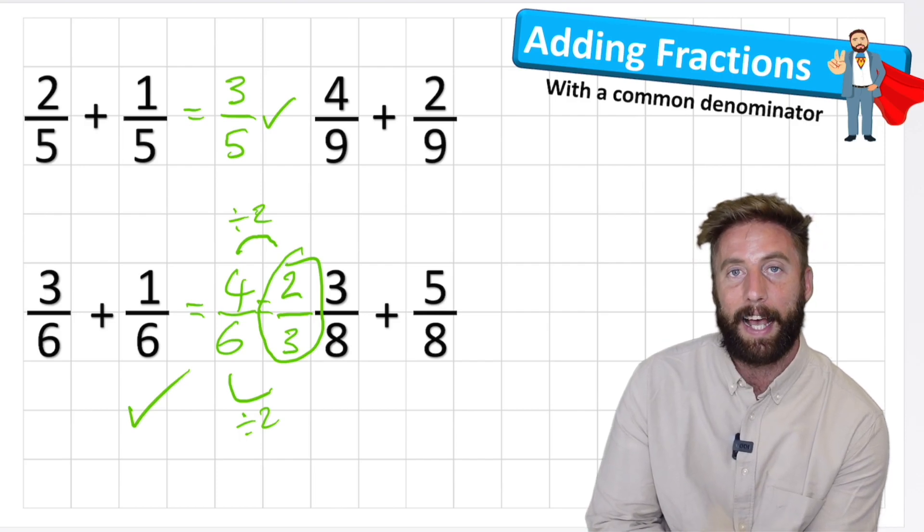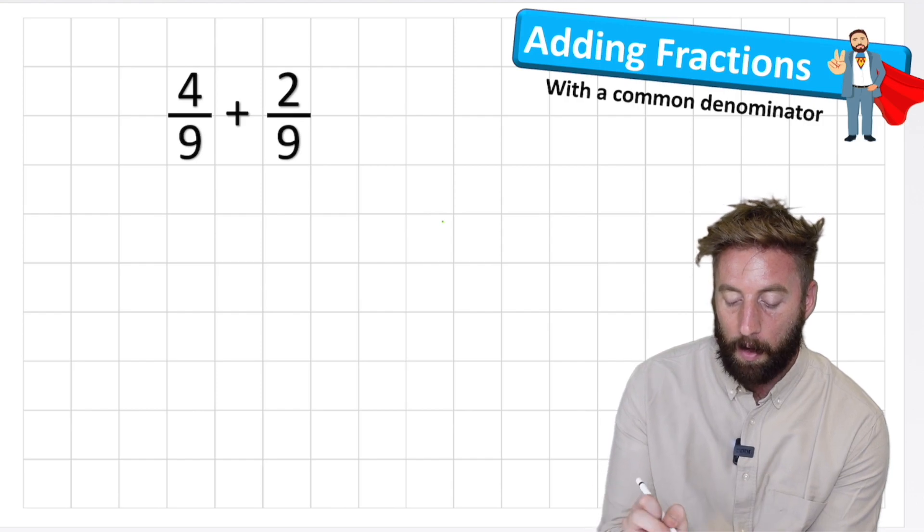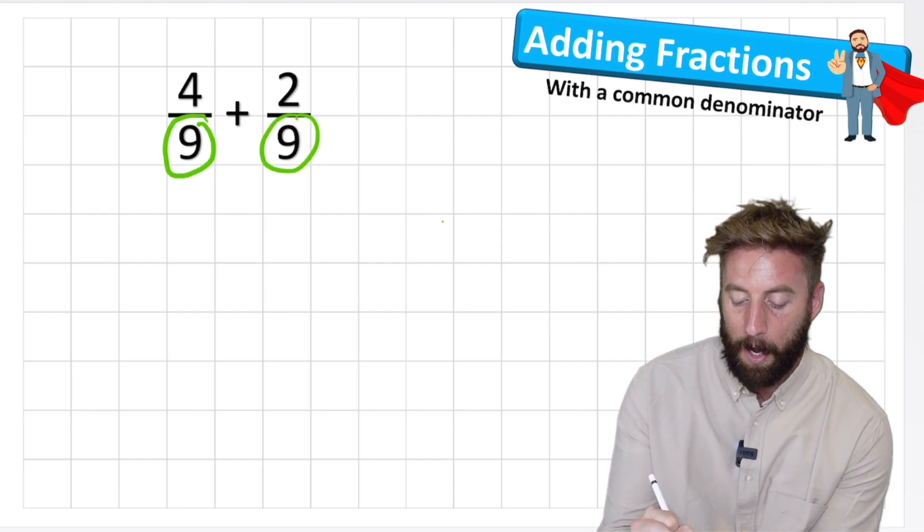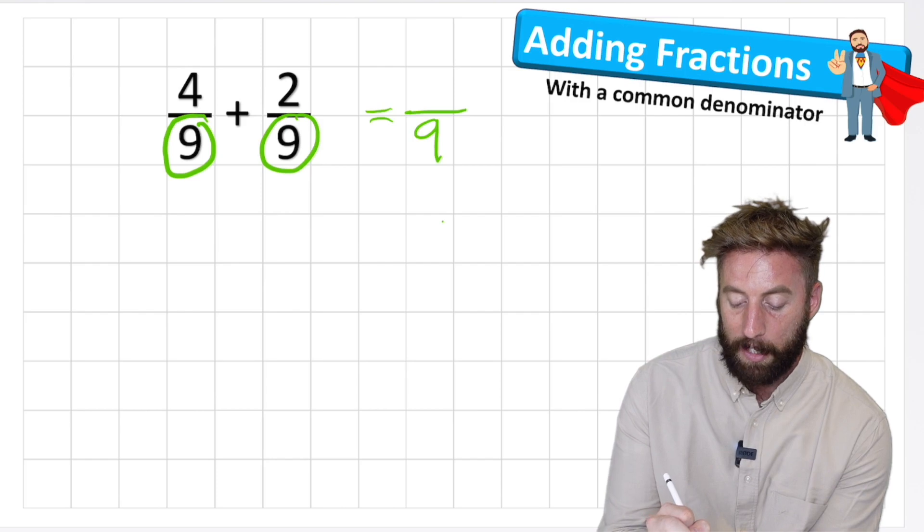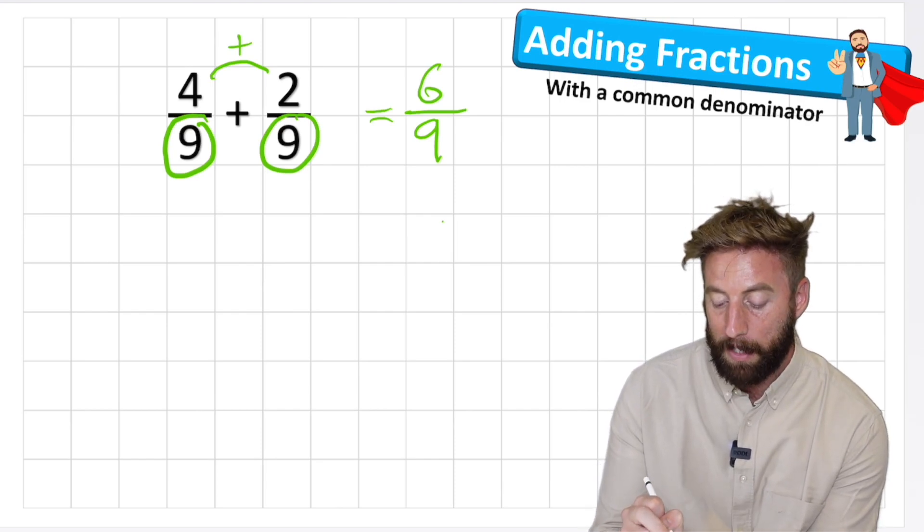Okay question three, four ninths add two ninths. Here we go and I'm just going to do this in my super quick method now. So I'm adding ninths, so I have ninths, therefore my answer must be in ninths too. And I can simply add my two numerators together, four add two equals six, six ninths. And can any of you see a common factor between my six and nine? Well done,